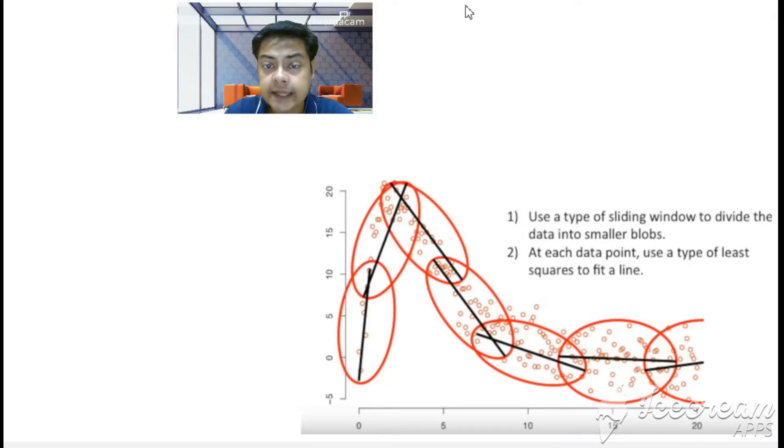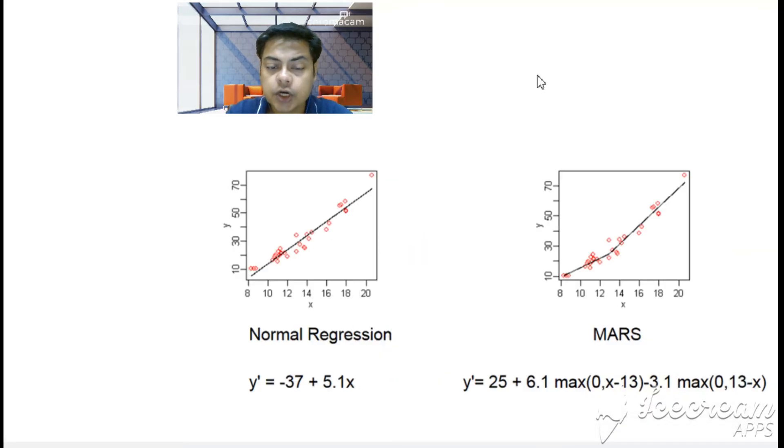Let's start again. We'll now go to the next part. A normal regression you can see just below my photo—there's a normal regression pattern. On the other side of the screen there's a MARS pattern, so you can see the difference. For normal regression it's simple y = a + bx where a is the intercept, here it's -37, and b = 5.1.